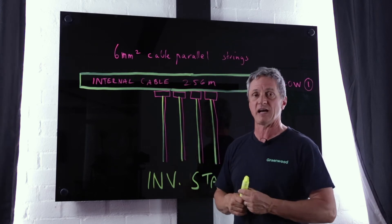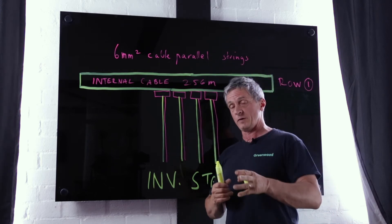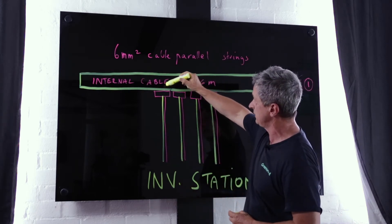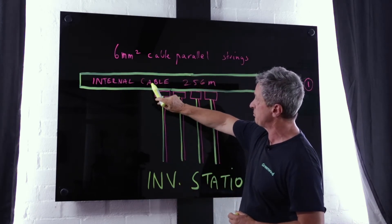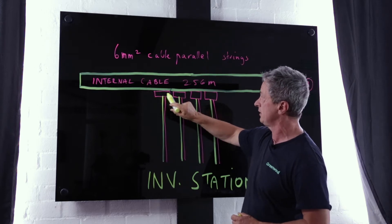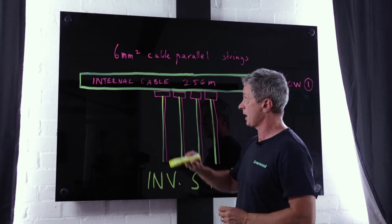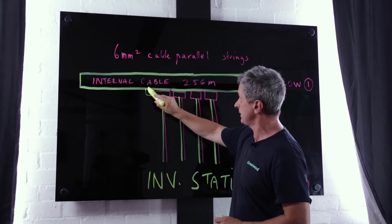We're going to still use 256 meters of cable. Whether we use 4mm or 6mm is another question. But at this point here we are effectively paralleling two strings into each of the four DC isolators. So we've got two strings coming in here, two strings in here, two strings in here and two strings in here.